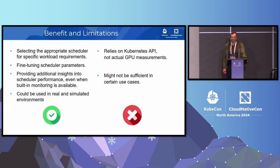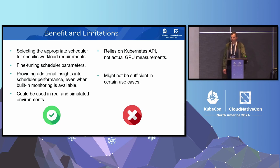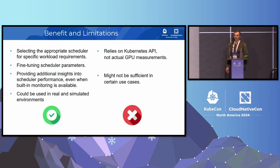The Node Resource Exporter could be beneficial for selecting the right scheduler for your needs. It can also be used for fine-tuning scheduler settings and configuration, and it could provide additional insights into your system. It can also work with real and simulated environments. For limitations, I would say the main limitation is that it relies on the Kubernetes API rather than actual GPU measurements, which might not be applicable for every use case.